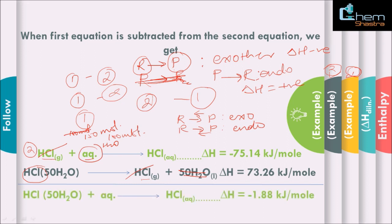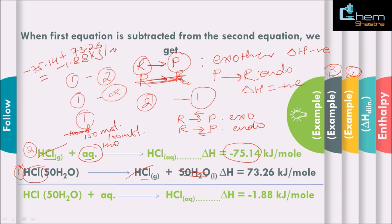The net reaction gives us: delta H = minus 75.14 plus 73.26, which equals minus 1.88 kJ per mole. This is what is called the enthalpy of dilution. You had HCl at a specific concentration, you added water to it, the concentration changed, and the enthalpy change associated with that process — enthalpy of dilution — is minus 1.88 kJ per mole in this example.